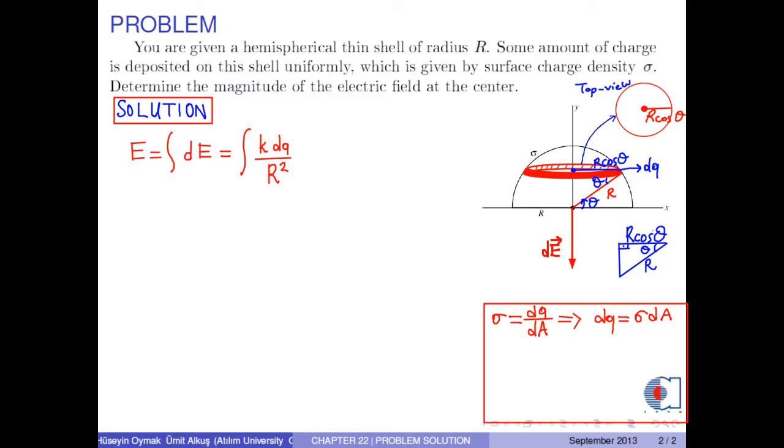According to the figure, dA is calculated by the formula 2 pi R times cosine theta times R times d theta. Or dq is written to be sigma times 2 pi R squared cosine theta d theta.